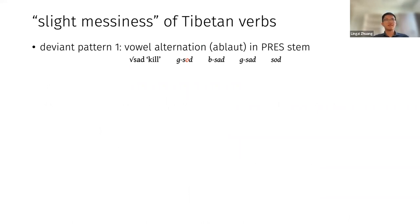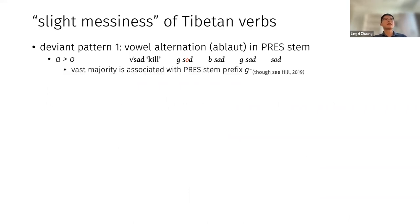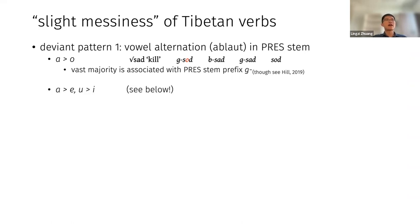Deviant pattern number one is a vowel alternation in the present stem — a set of ablaut patterns. One of them is that if you have an 'a' in the root of the verb, like 'to kill' (sat), you get 'gesod' in the present stem. The vast majority of cases of this ablaut are associated with a particular present stem prefix — the 'ge' prefix — although there are exceptions. The other pattern is a fronting pattern: 'a' becomes 'e', 'u' becomes 'e'.